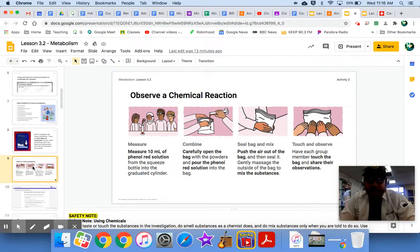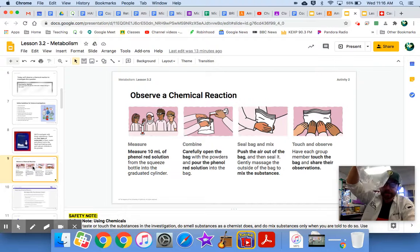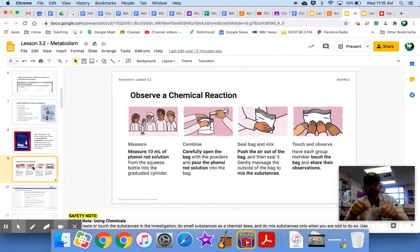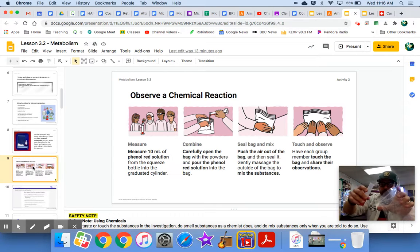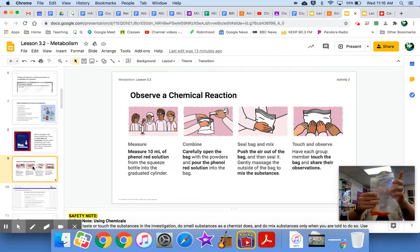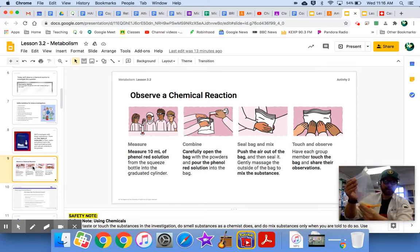Carefully open the bag with the powders and pour the phenyl red solution into the bag. Here's my powders. I pre-measured them. I have a tablespoon of calcium chloride. I have a teaspoon of baking soda that I've measured and put into this bag. Seal. So pour it in, seal the bag and mix it. Push the air out of the bag. Here we go. Are you ready? Are you ready for it? There you go. Seal the bag. Push the air out of the bag. Seal it. And then gently massage the outside of the bag to mix the substances.